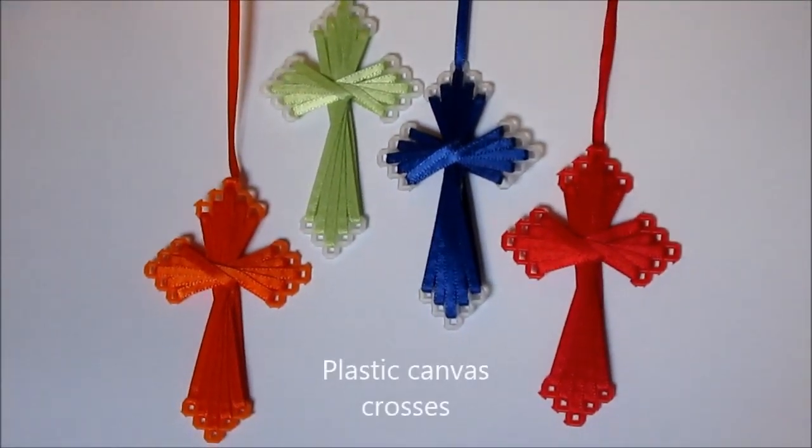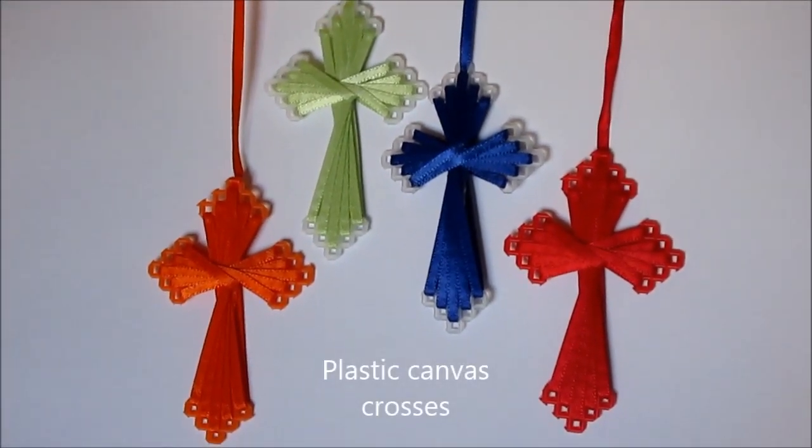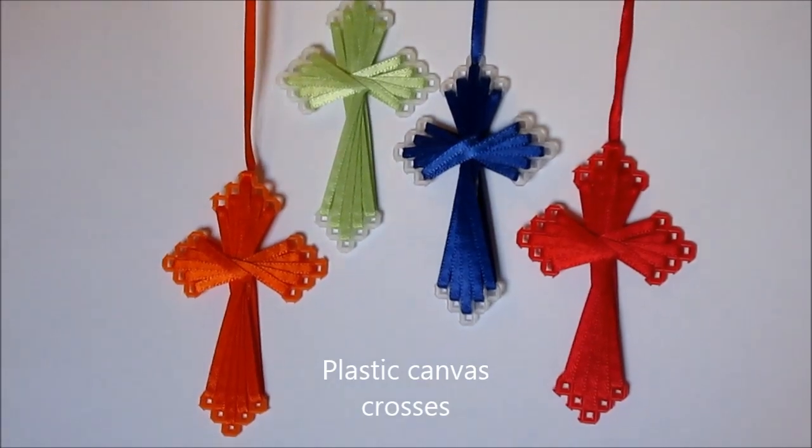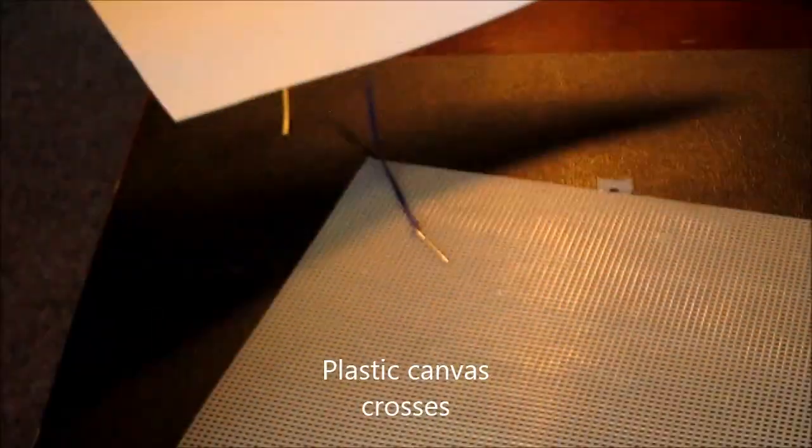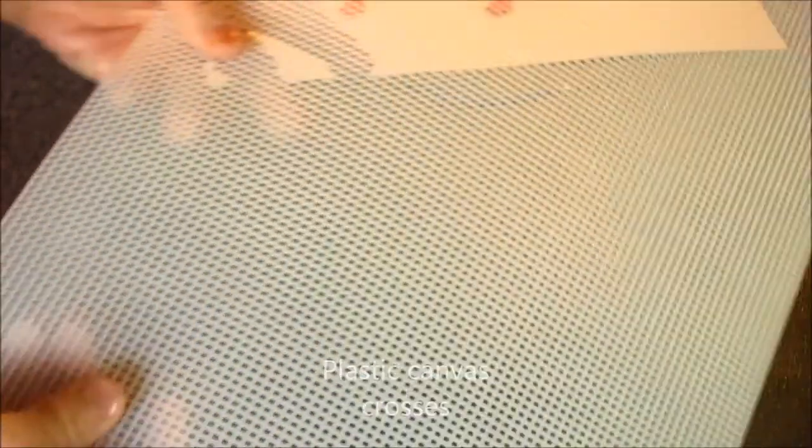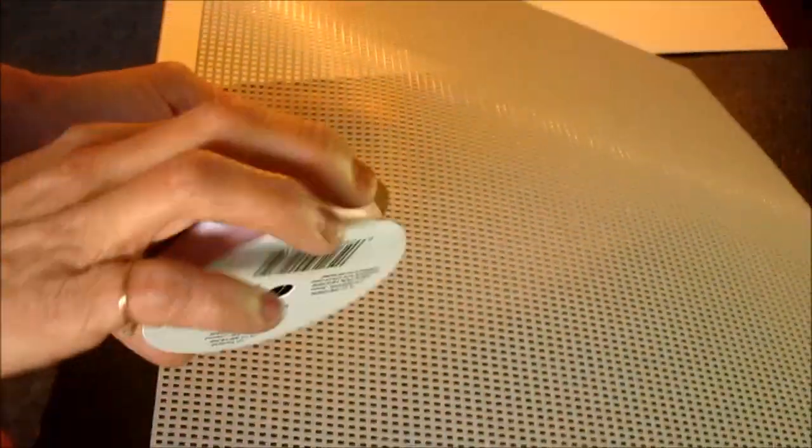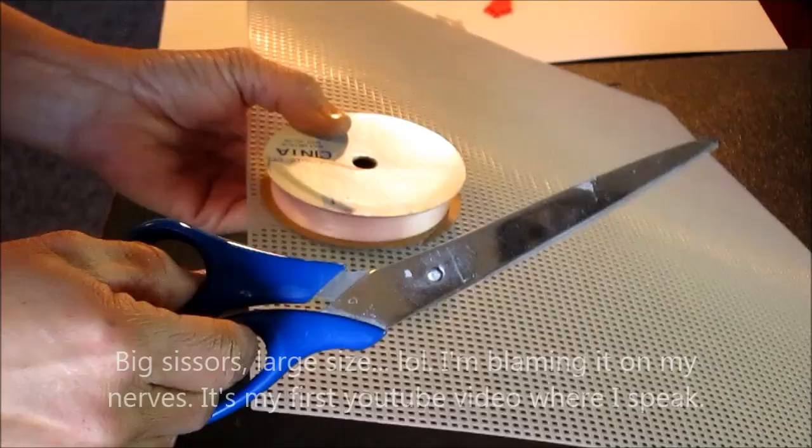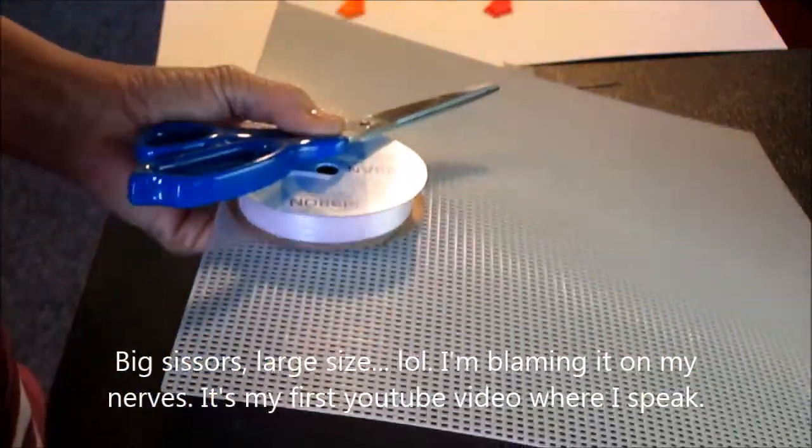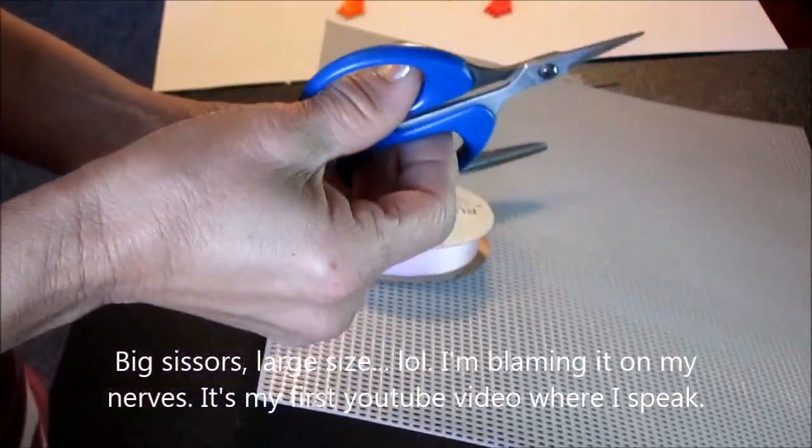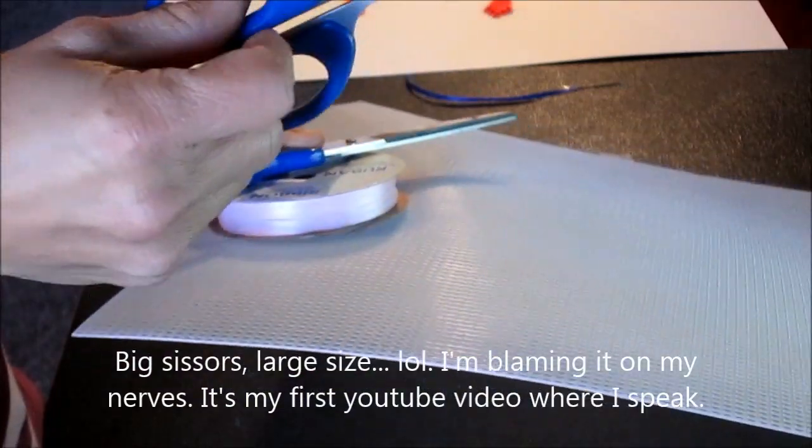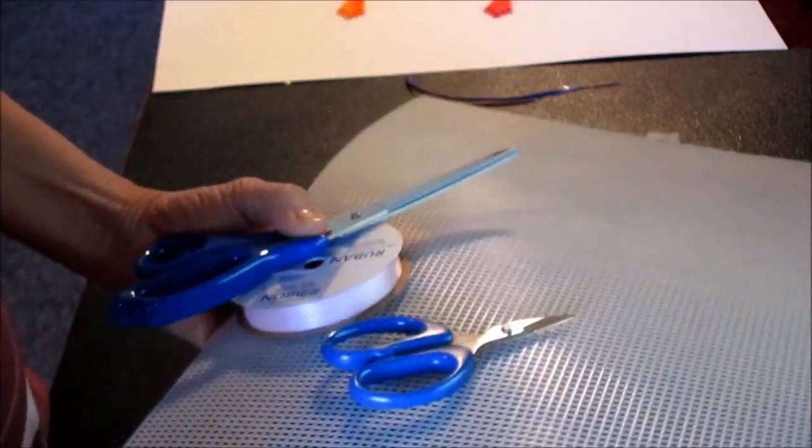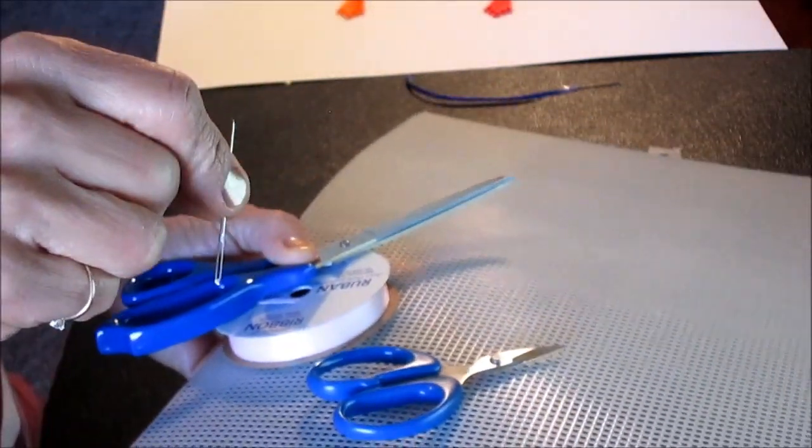Hi, Cynthia here. Today I'll be showing you how to make these plastic canvas crosses and for these you are going to need some plastic canvas of course, some ribbon, a pair of big scissors, large size, a pair of small pointy scissors because we'll be doing some intricate cutting and a large eye blunt needle.